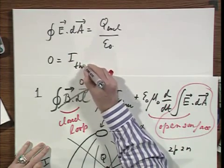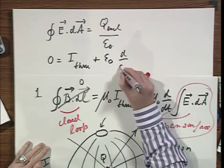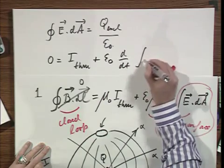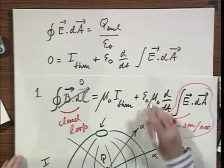Equals I through plus epsilon zero times d/dt times the integral of the electric flux through that open surface.